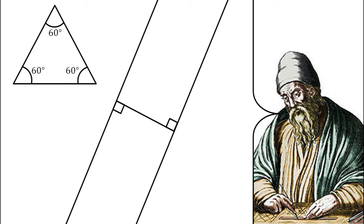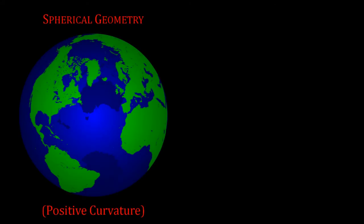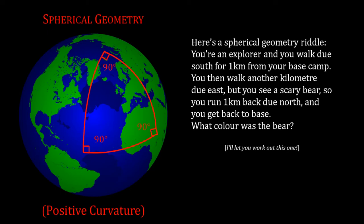However, this is not the only type of geometry. We can curve our flat surface into a sphere, and now we can construct a triangle with two or even three right angles.